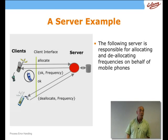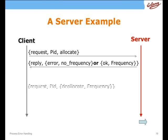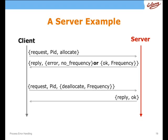And here we see a typical message sequence chart for the client and server. We start off by the client sending a request. It says, I would like a frequency. Here's my PID. And the third part of the message is allocate. So it's saying, I would like a frequency. And then what we expect to see is a reply, wrapped up in a tuple beginning with reply,